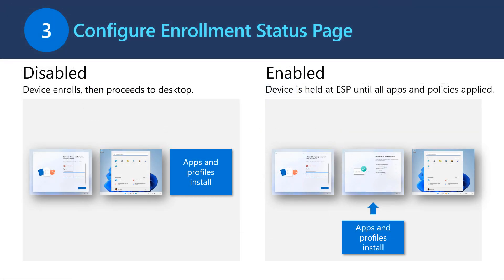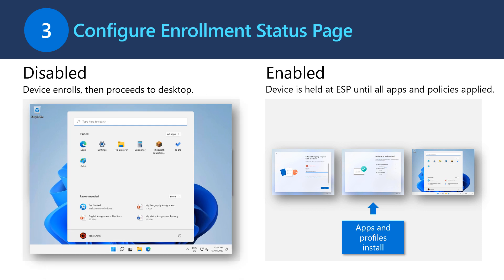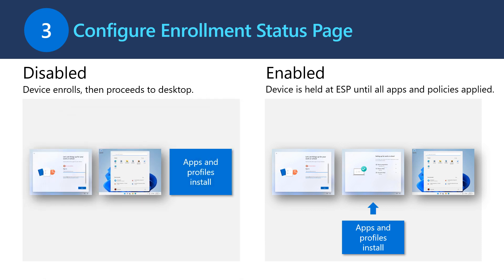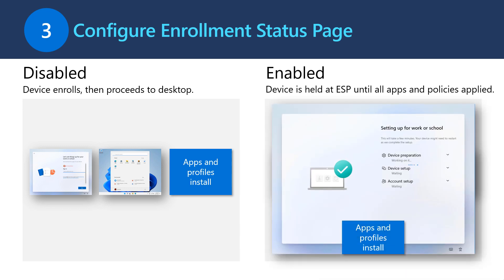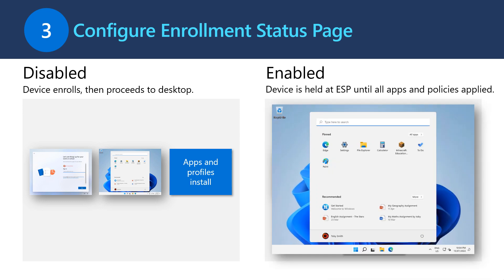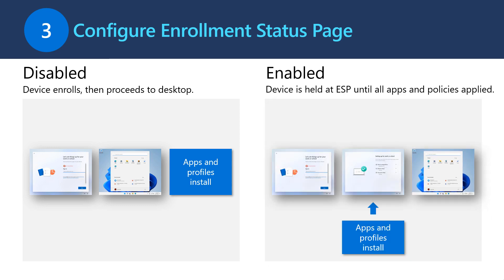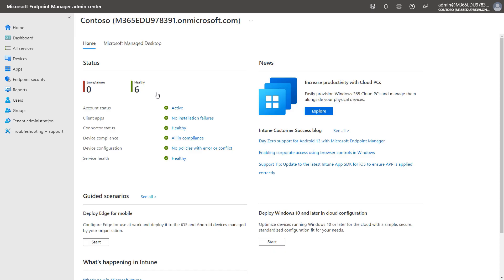Now we're going to configure the Enrollment Status page. You can leave the Enrollment Status page disabled — in this configuration, Autopilot will enroll the device into Intune and then the device will go straight to the desktop. Apps and profiles will continue to install in the background, and the student or user can start using the device. But if you want to ensure that all of your apps and config are applied before anyone can use the device, you can enable the Enrollment Status page. After authenticating, the Enrollment Status page is shown where information about the device and user setup are displayed. Once all apps and profiles are installed, the user is allowed to access the desktop and start using the device.